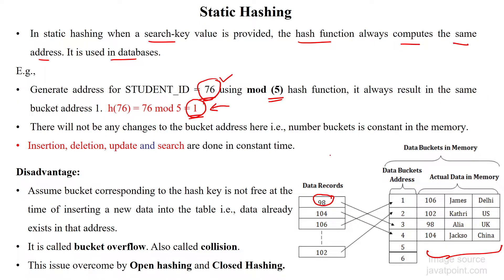Student 98 is stored at index number 3 because 98 mod 5 equals 3. So 98 is stored in bucket 3 — that is the hash table bucket — and the 98th student's data is stored in that bucket.